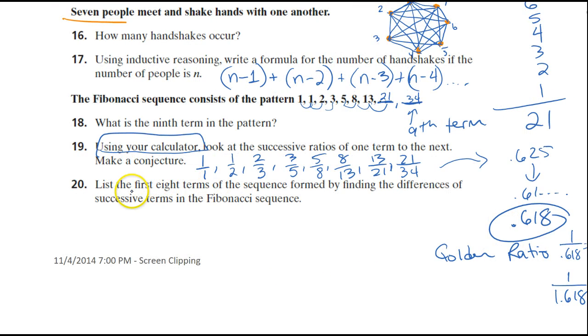Then, lastly, we list the first 8 terms of the sequence that we get when we find the differences of the terms in the Fibonacci sequence. Okay, so we're going to do subtraction. 1 minus 1 is 0. 2 minus 1, that's 1. 3 minus 2, 1. 5 minus 3, 2. 8 minus 5, 3. 13 minus 8, 5. 21 take away 13, that's 8. 34 take away 21, yep, 13. So, Fibonacci sequence can be derived from the Fibonacci sequence.